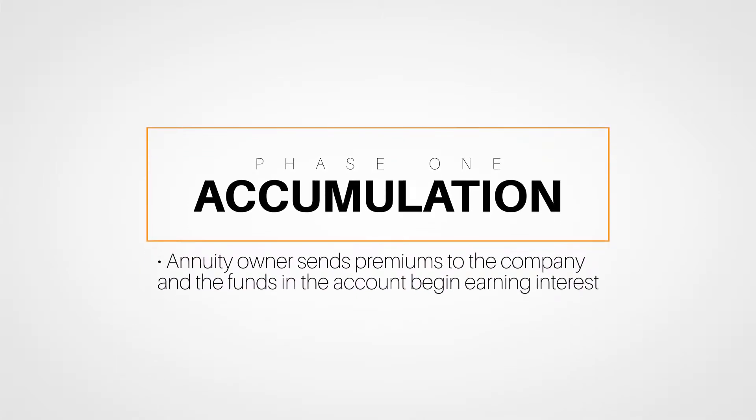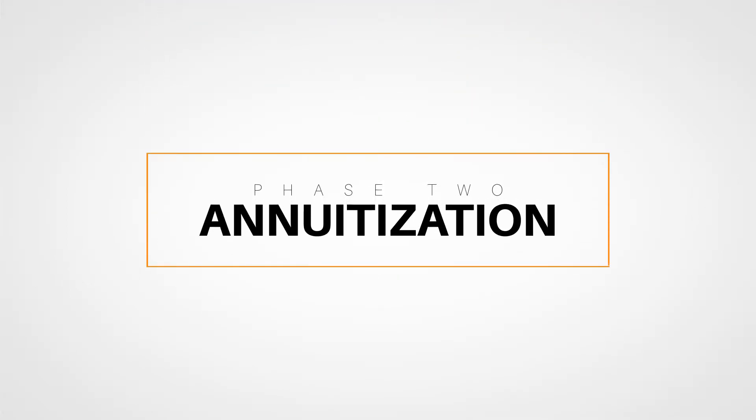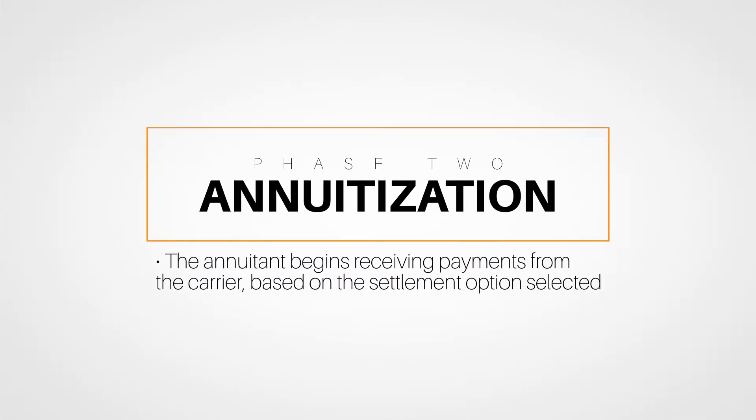We started this lesson with a look at the basic concepts surrounding annuities and their lifespan. Annuities have two phases: first is the accumulation phase, where the annuity owner sends premiums to the company and the funds in the account begin earning interest. Then there's the annuitization phase, when the annuitant begins receiving payments from the carrier based on the settlement option selected. These settlement options are discussed in the next section of the course.